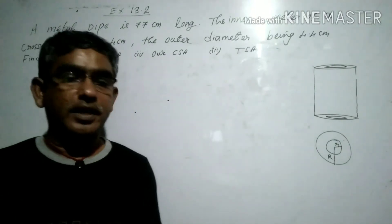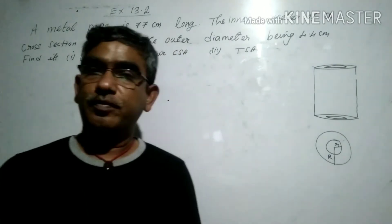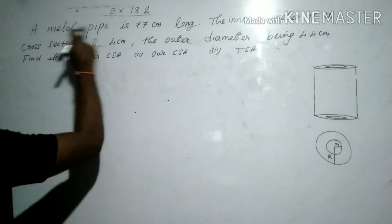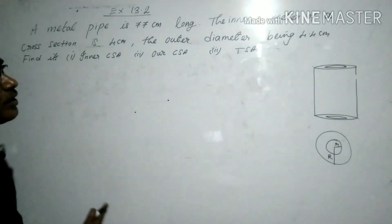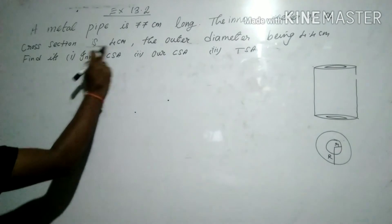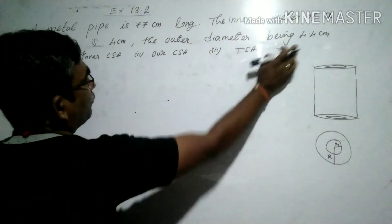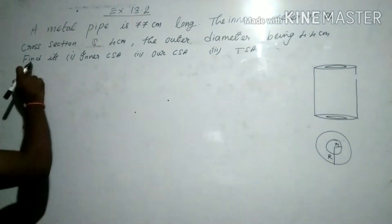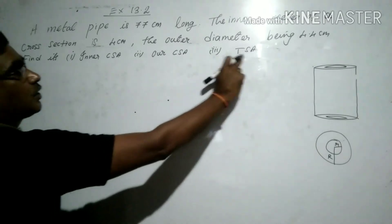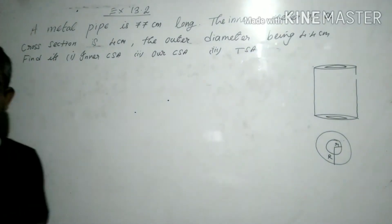Let's come to Exercise 13.2, question number 3. A metal pipe is 77 centimeters long. The inner diameter of the cross section is 4 centimeters and the outer diameter is 4.4 centimeters. We need to find the inner curved surface area, outer curved surface area, and total surface area.